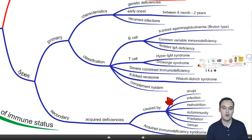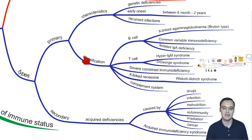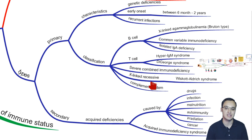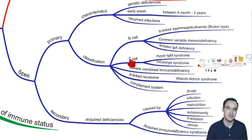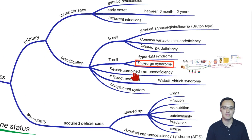The primary immunodeficiency can be classified as B cell, T cell, and some other diseases. Our topic today will be DiGeorge syndrome, which is a T cell deficiency. So let's dig in.